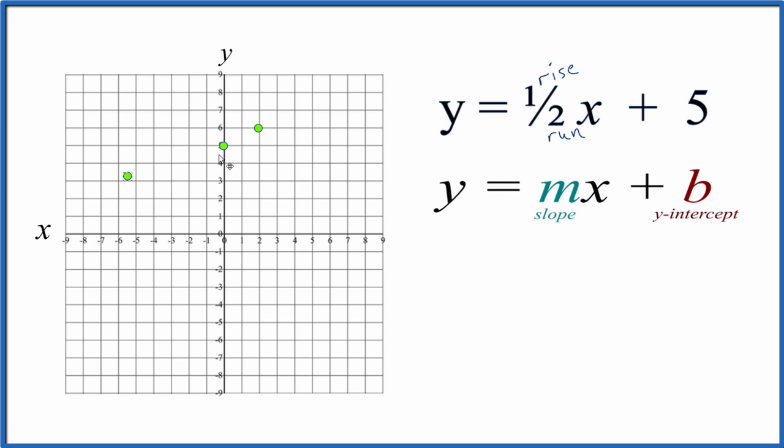Then we do it again. We rise from this point 1, go over 1, 2. And we have three points. We could draw our line. You could also go down 1 and over 2 in the opposite direction. And those points, they'd be on the line as well.